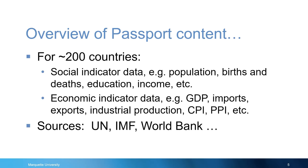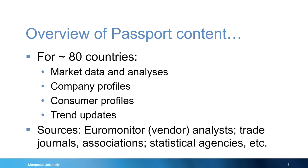So what is in Passport? For about 200 countries, there are social and economic indicator data. These data originally come from institutions such as the UN, IMF, and World Bank. For about 80 countries, there are data and analyses for markets, companies, and consumers, and trend updates. This content comes from Euromonitor's analysts, trade associations and journals, and more.